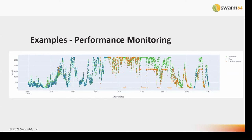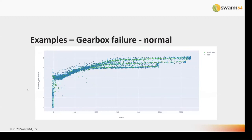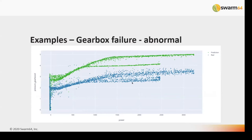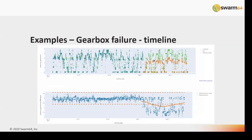Another example: on the y-axis is gearbox oil pressure, and on the x-axis is power. You can see the turbine's different operating states. This is normal behavior — but here the pressure has dropped, shown in blue as the real values and green as the predictions. Something was wrong: the oil cable connections had broken, causing a pressure drop. You want to proactively detect this — when the pressure starts to drop, you need to act before the turbine enters a problematic state.